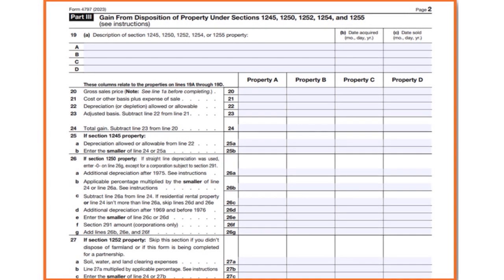Part 3 is not applicable to our situation here, but I wanted to show it anyway so we have a clear idea of what details are involved. We'll leave this on the screen for a few seconds so you can see what it looks like. You actually have to detail all the info by property — property A, property B, property C, property D. If you have more properties, just attach additional documents.